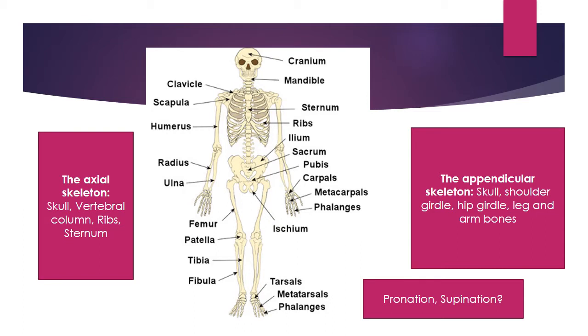To the right hand side you can see something which refers to the appendicular skeleton. So that includes bones such as the shoulder girdle, hip girdle, and leg and arm bones — most of those bones which are responsible for movement.